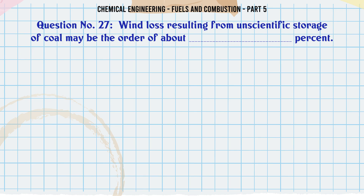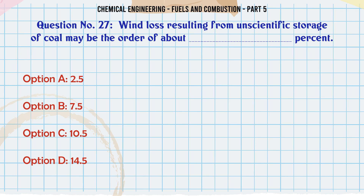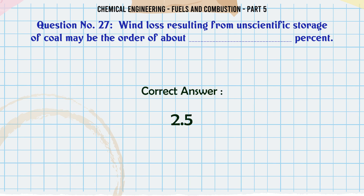Wind loss resulting from unscientific storage of coal may be of the order of about __ percent: A. 2.5. B. 7.5. C. 10.5. D. 14.5. The correct answer is 2.5.